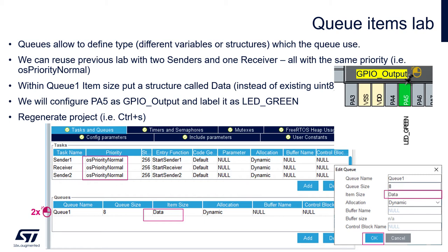Let's start from STM32CubeMX or STM32CubeIDE and go to its configuration. We can reuse the previous lab with two senders and one receiver. All of those tasks should have the same priority, for example OSPriorityNormal. For queue1ItemSize, please put a structure called 'data' instead of the existing unsigned int 8-bit. Please keep the queue size at 8 components like before. After this, please generate the project and open the main.c file.